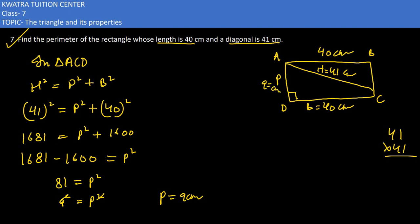Now, I need to find the perimeter of the rectangle. Perimeter of rectangle is 2 times length plus breadth. 2 times length is 40 cm and breadth is 9 cm. So 2 times 49, which is 98 cm.